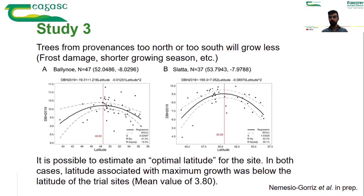If provenances are from too far south, they might get frost damage because they flush too early in the spring. Or if they are from too far north, perhaps they don't use and optimize the growing season — they flush late, their senescence occurs early, and they have a shorter growing period, which leads them to grow less.